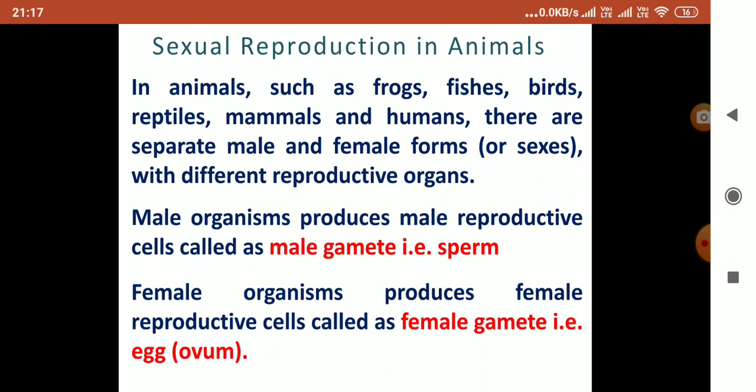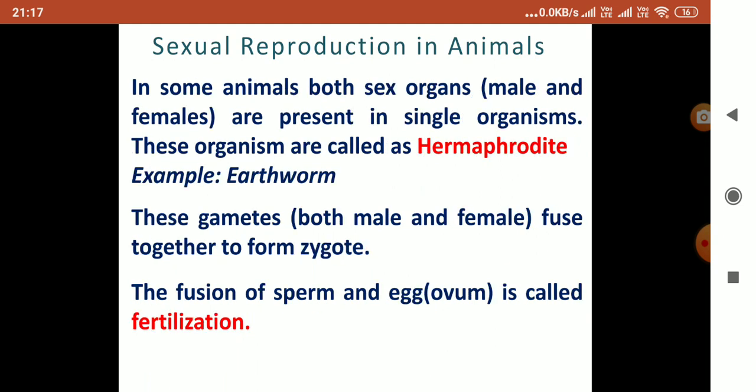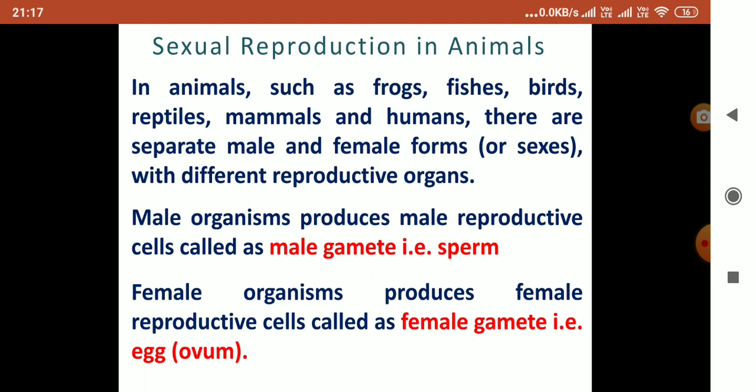Sexual reproduction in animals — in animals such as frogs, fishes, birds, reptiles, mammals, and humans, there are separate male and female forms, or sexes, with different reproductive organs.